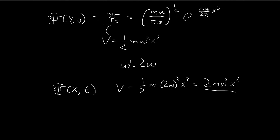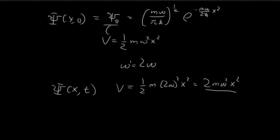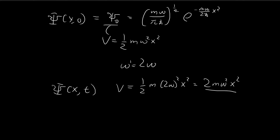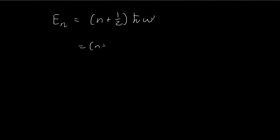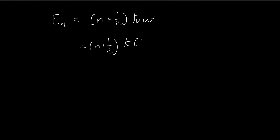Under this new potential, we want to find two things: the probability of getting a measurement of ℏω/2, and the probability of getting ℏω. The formula for the nth energy level is En = (n + ½)ℏω'. In this case our ω' is equal to 2ω, so substituting gives En = (2n + 1)ℏω, where n = 0, 1, 2, and so on.